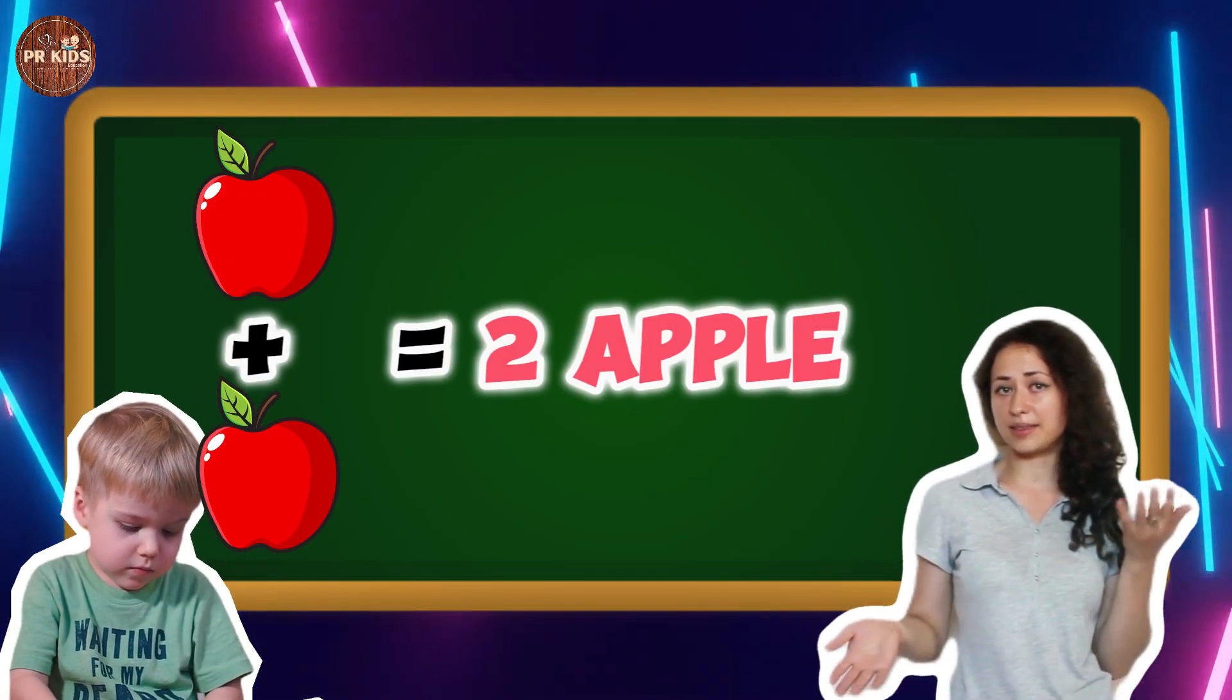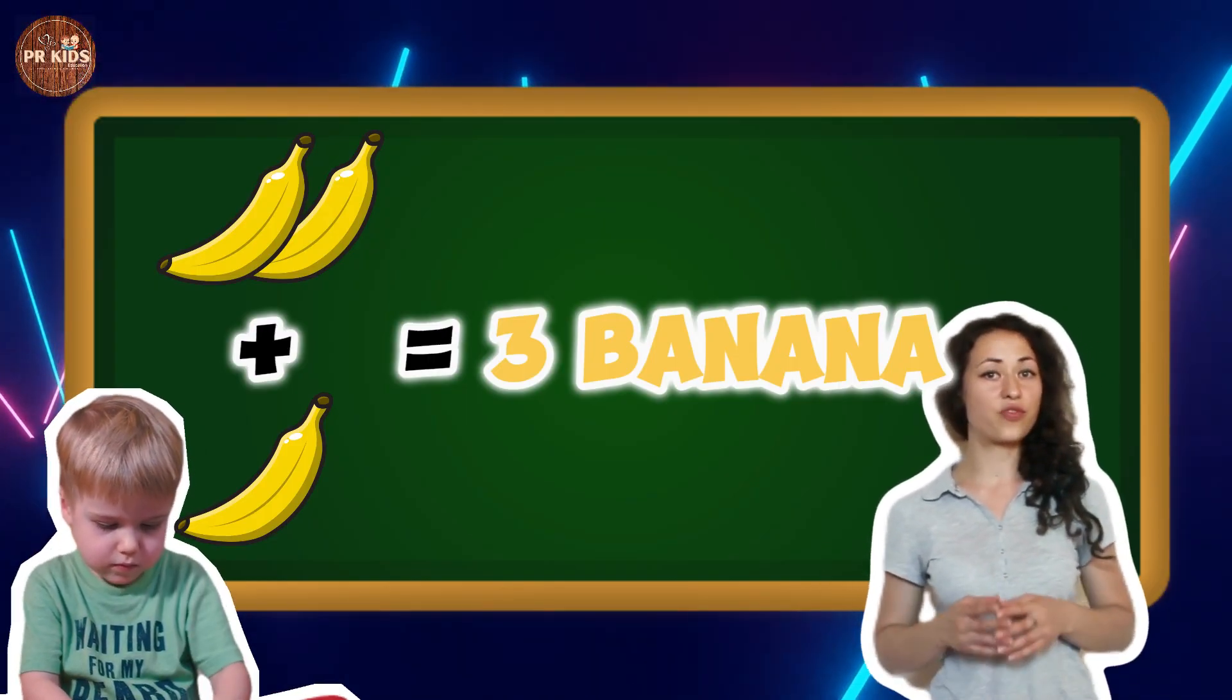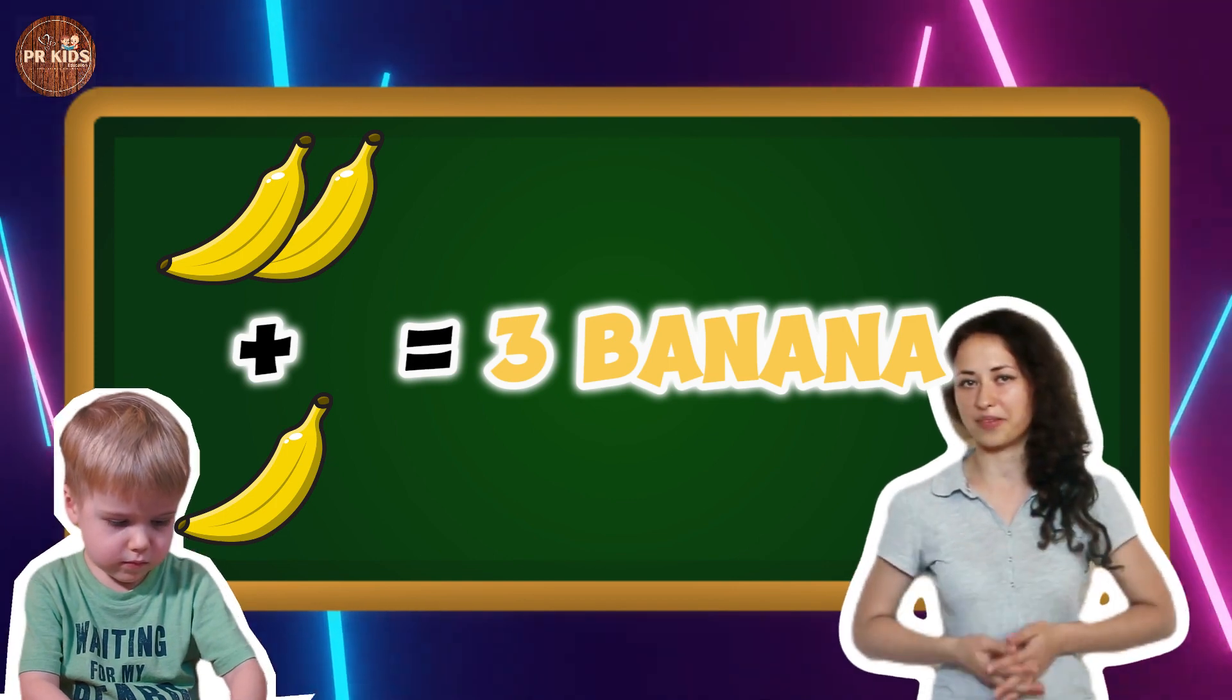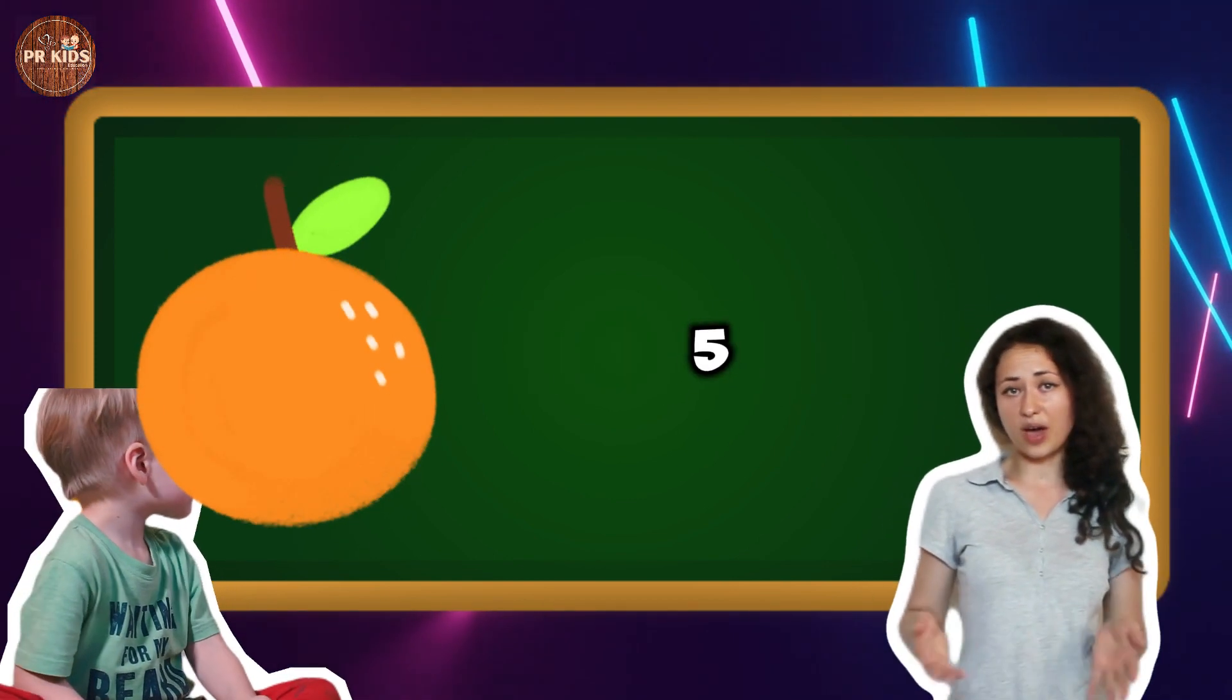Two bananas plus one banana - three bananas. One, two, three - three bananas. Three oranges plus two oranges makes five oranges.